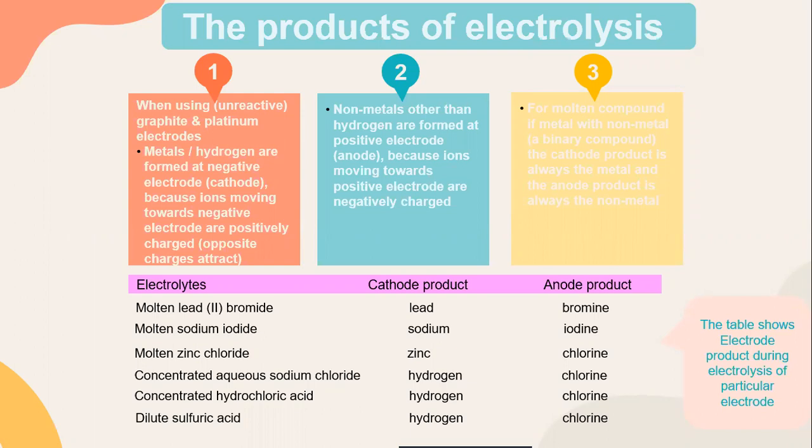You can see a table here with electrolytes, cathode product, and anode product. For electrolysis of molten lead bromide: cathode is lead, anode is bromine. Molten sodium iodide: cathode is sodium, anode is iodine. Molten zinc chloride: cathode is zinc, anode is chlorine. Concentrated aqueous sodium chloride: cathode is hydrogen, anode is chlorine. Concentrated hydrochloric acid: cathode is hydrogen, anode is chlorine. Dilute sulfuric acid: cathode is hydrogen, anode is oxygen.